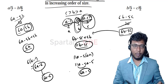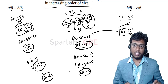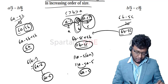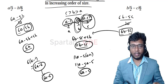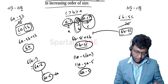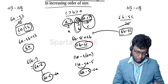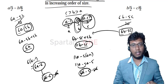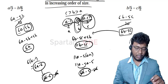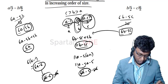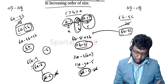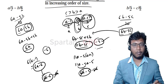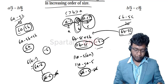Now, since both quantities have 6A, we can cancel it from both sides: 6A − 6A cancels, leaving −6 in quantity A and −5 in quantity B. The question is now reduced to constants. Since −5 > −6, quantity B is greater. The answer is quantity B.